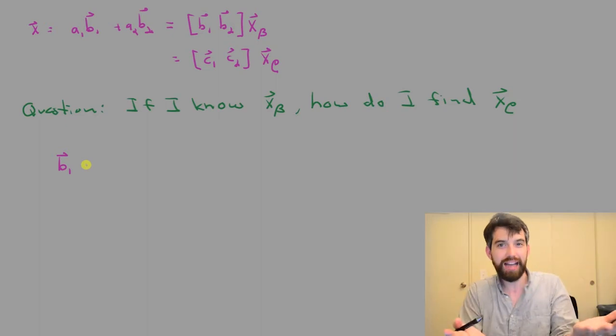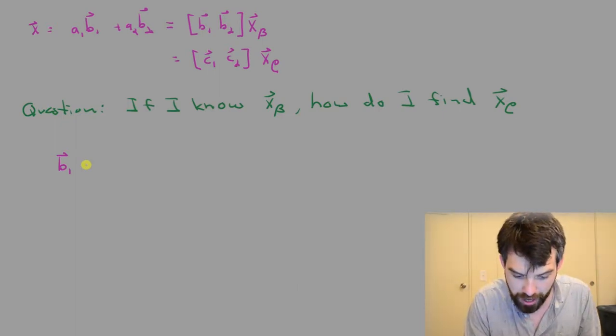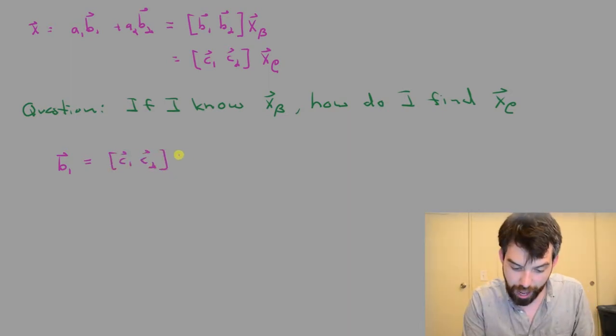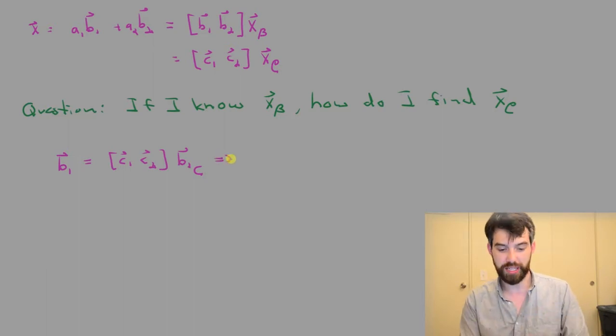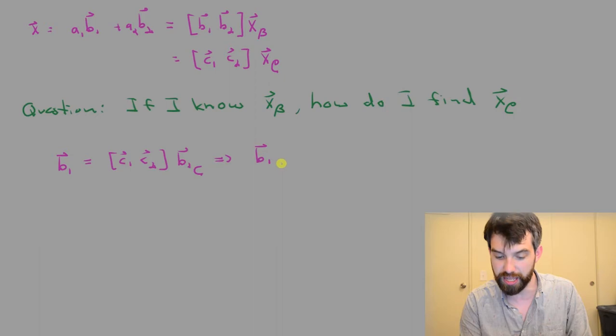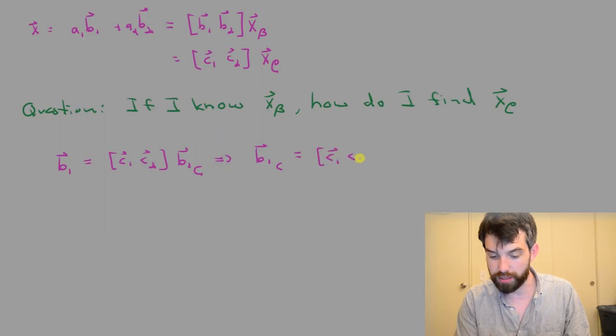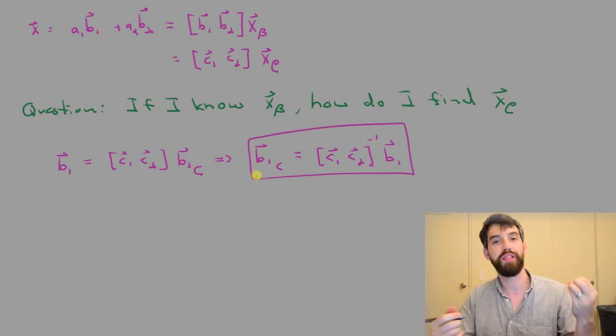That is, instead of taking a vector X and trying to write it in the C basis, I'm going to take the specific vector B1 and write it in the C basis. So I can write the B1 as this vector C1, C2 multiplied by the B1 vector in that C basis. Or, if I wished I could rearrange things and write it in the following way, I could say that the B1 vector in the C basis, I'm going to invert that matrix, and I can therefore write it as C1, C2 inverse, all multiplied to the vector B1. So I have this pleasing relationship between a particular vector B1 and how I write it in the C basis.